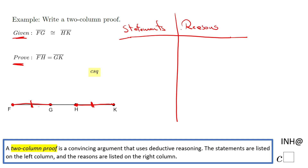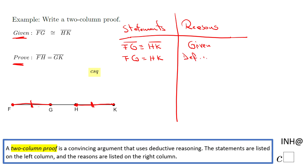You always want to start with what is given. In our case, segment FG is congruent to segment HK — that is given. Now, we want to go from this statement to: the measure of segment FG equals the measure of segment HK. That is the definition of congruent segments.